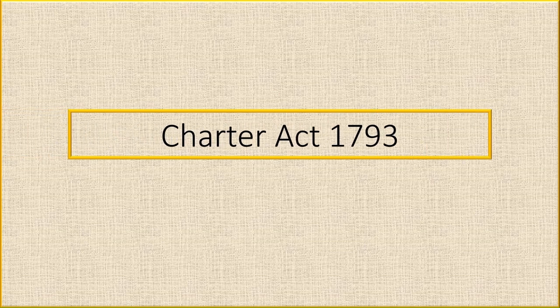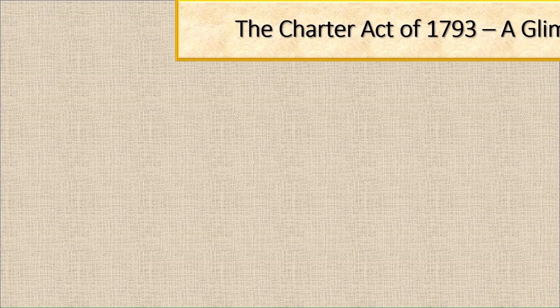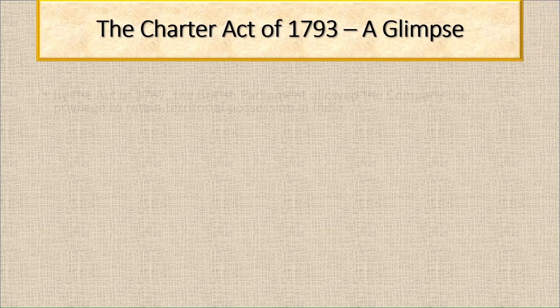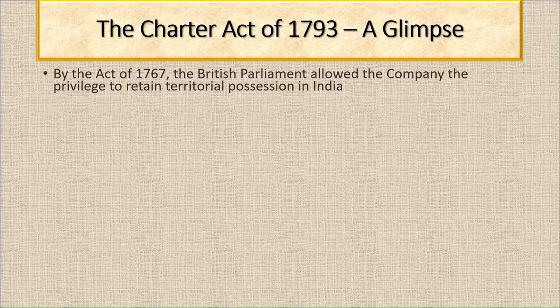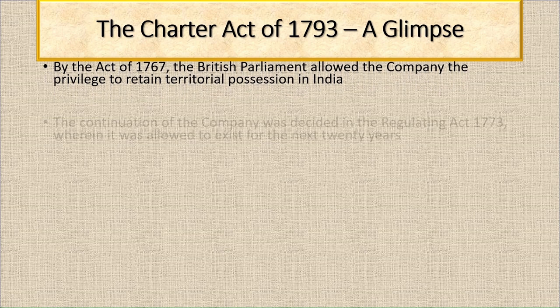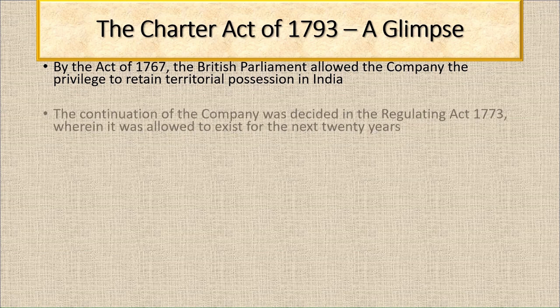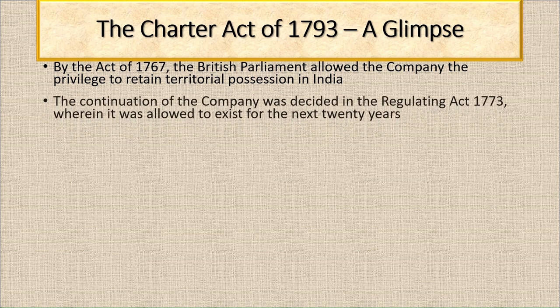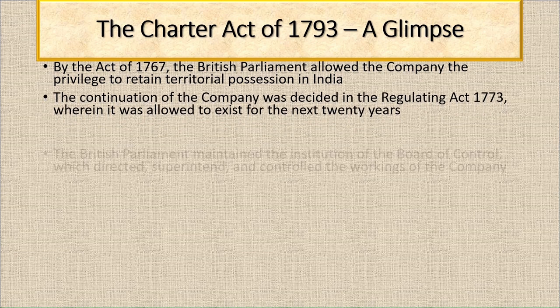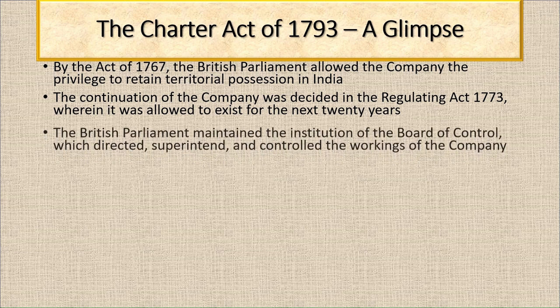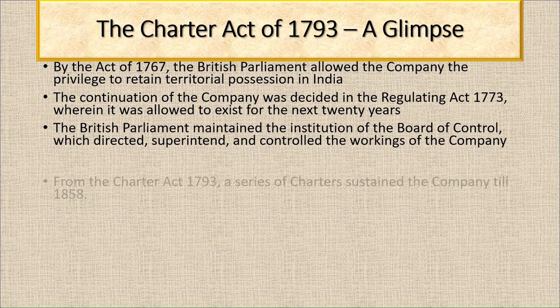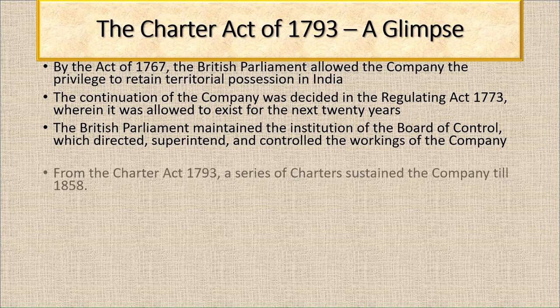The topic is the Circumstances, Provisions, and Significance of the Charter Act 1793. By the Act of 1767, the British Parliament allowed the company the privilege to retain territorial possession in India. The continuation of the company was decided in the Regulating Act 1773, wherein it was allowed to exist for the next 20 years. From the Charter Act 1793, a series of charters sustained the company till 1858.